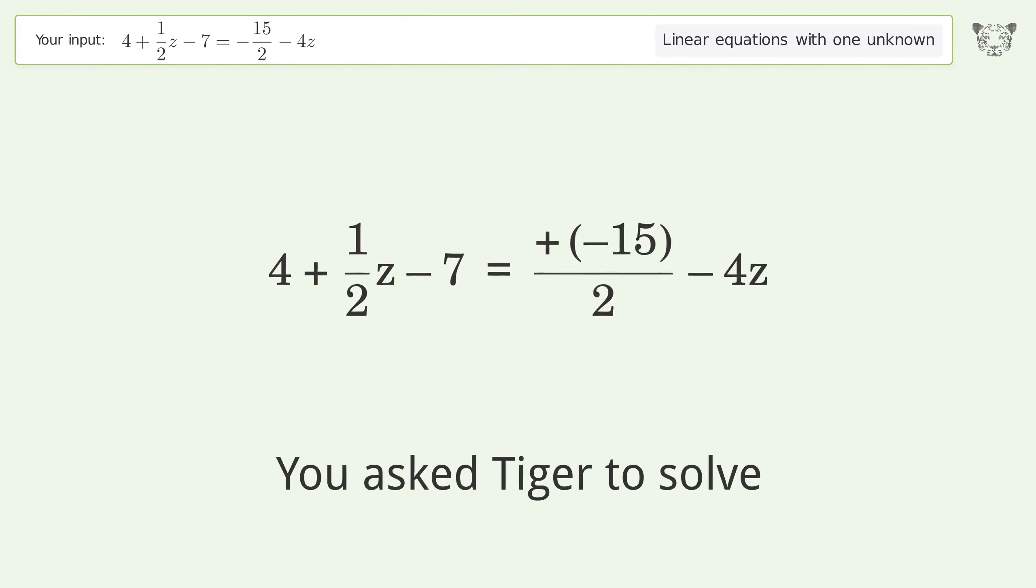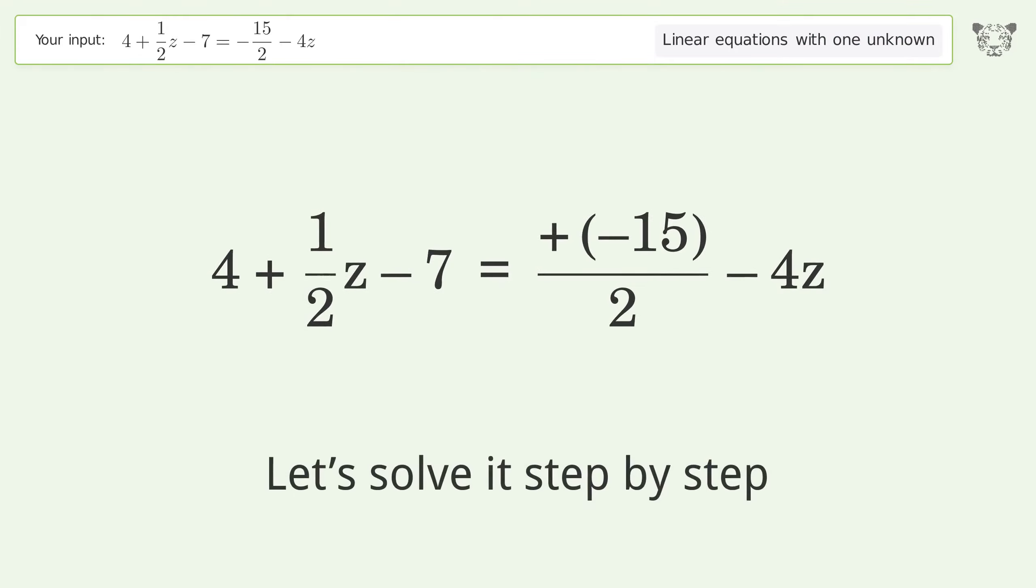You ask Tiger to solve this. This deals with linear equations with one unknown. The final result is z equals negative one. Let's solve it step by step. Simplify the expression.